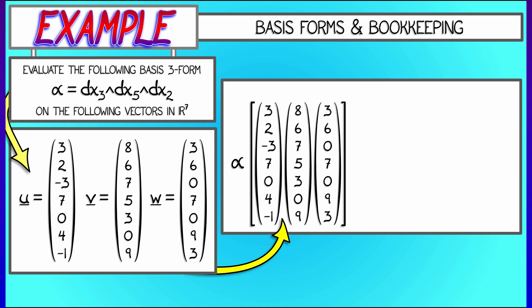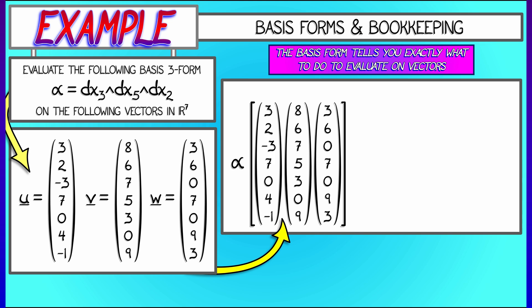But that matrix is not something we can take the determinant of, because it's got seven rows and three columns. So what this basis three form does is it tells you which rows to pick. We pick the third row, given by dx_3, then the fifth row, given by dx_5, then the second row, given by dx_2. And hitting u, v, w with this gives us the three-by-three matrix with rows (-3, 7, 0), (0, 3, 0), (2, 6, 6). Take the determinant of that. A little bit of minor expansion will show that that equals -54, as you can check.